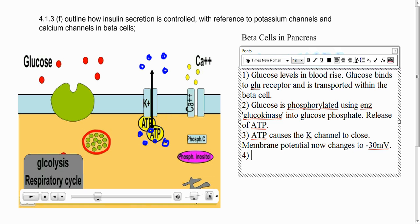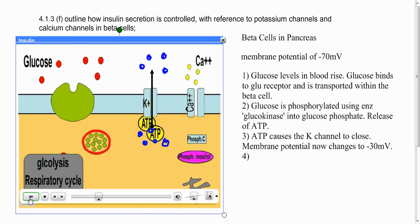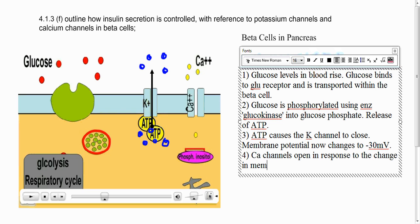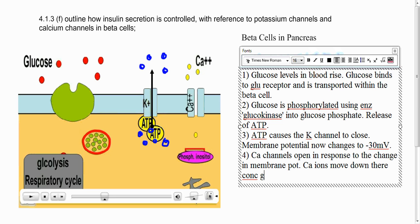So part four, let's just carry on with the animation. So what's going to happen next? As the calcium floods in, down its concentration gradient into the cell, there's a series of reactions that's going to be detailed on the animation over here. You don't need to worry about those in any detail. So next thing that happens is the calcium channels open in response to the change in the membrane potential, and then the calcium ions move down the concentration gradient into the cell.